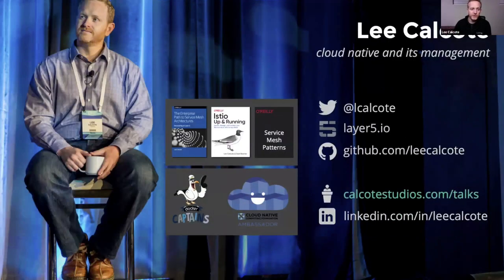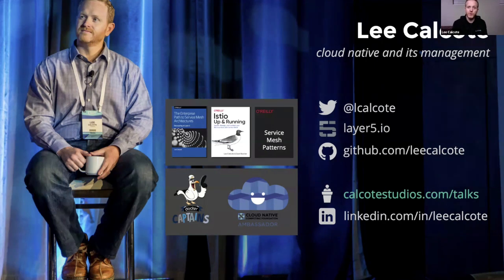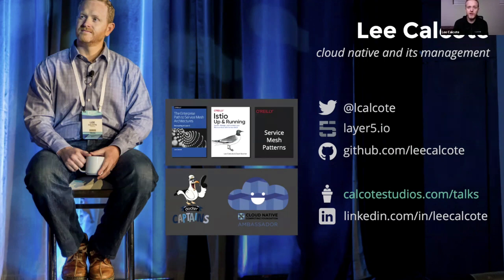By the way, my name is Lee Calcote. I'm joining you today from Austin, Texas. I wear a number of hats and have been focused in this ecosystem for a long time. One of the hats I wear is as co-chair of the CNCF's special interest group on networking, covering projects like Linkerd, CoreDNS, Envoy, GRPC, Service Mesh Interface, and Kuma. I also wear a hat as a Docker captain and as an author on the subject of service meshes, authoring a couple of books at the moment.